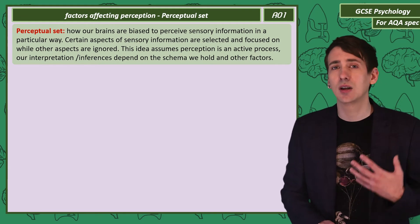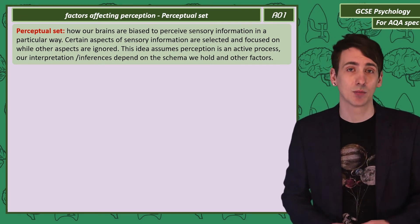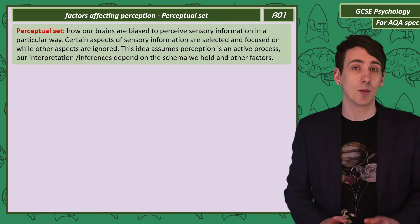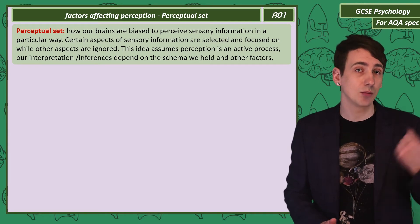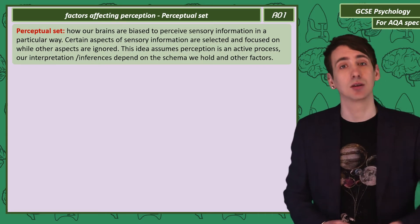So what factors can influence our perceptual set? In this video I'm going to talk about four: culture, motivation, emotion, and expectation.